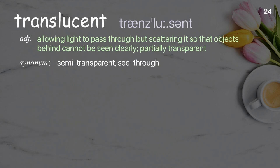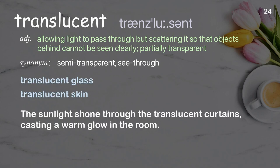Translucent. Allowing light to pass through, but scattering it so that objects behind cannot be seen clearly; partially transparent. Examples: translucent glass, translucent skin. The sunlight shone through the translucent curtains, casting a warm glow in the room.